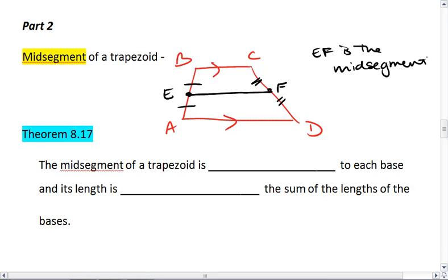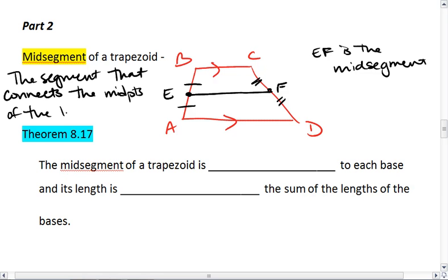EF is the midsegment, and the definition of a midsegment is the segment that connects the midpoints of the legs of a trapezoid. So it's the segment that connects the midpoints of the legs.